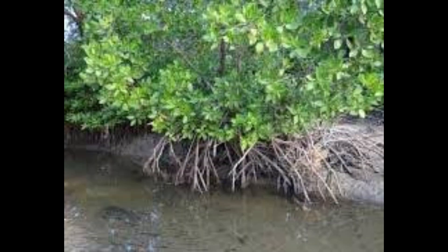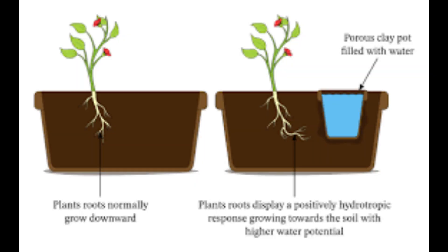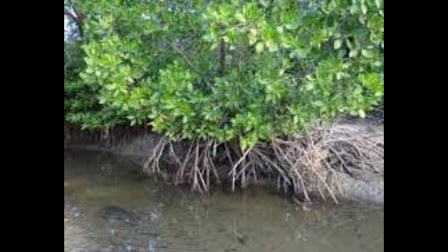Hydrotropism: growth towards moisture or water sources. Example — roots seeking out water in dry soil.